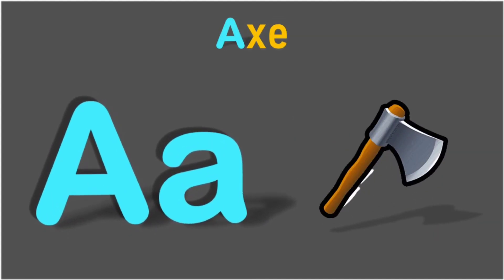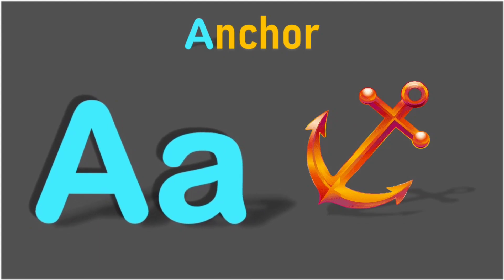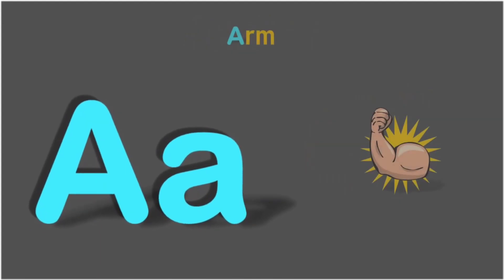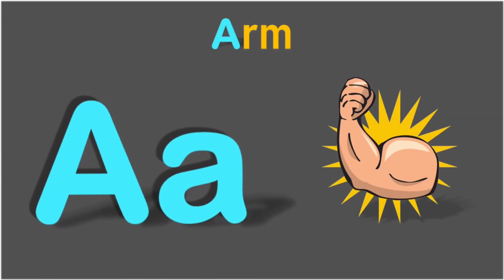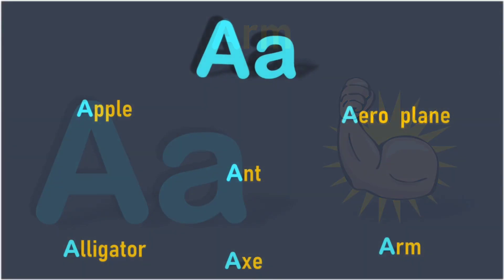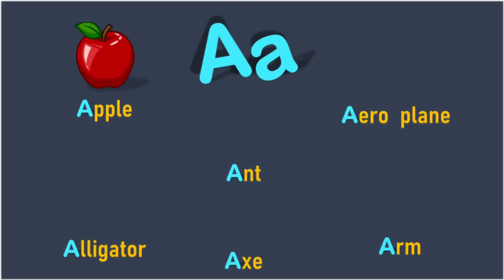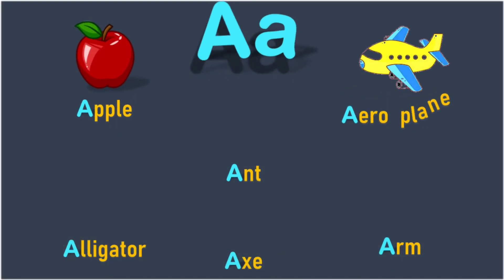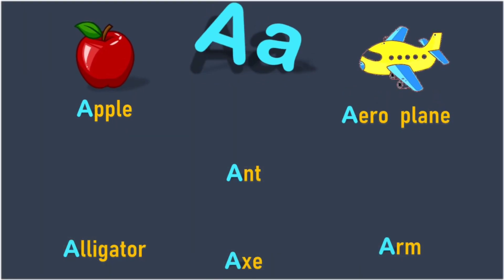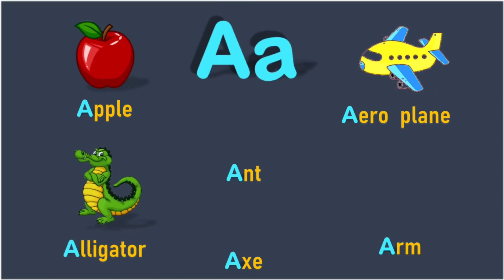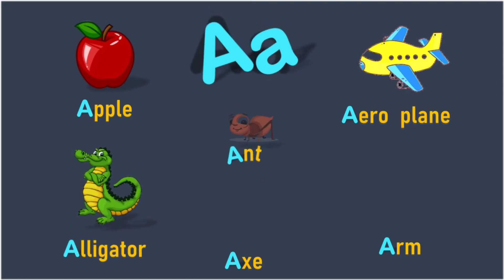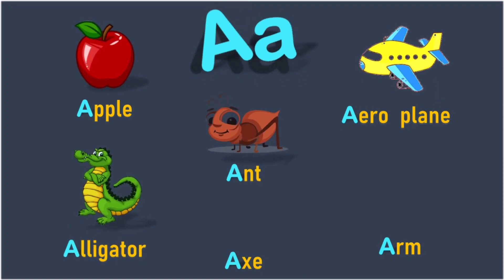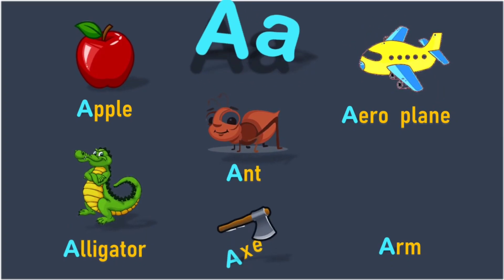A for axe and A for anchor. A. A for arm. Apple, aeroplane, alligator and axe.